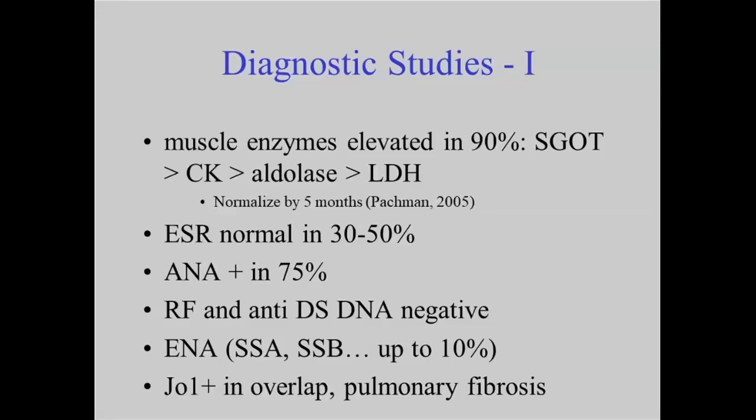There are now other antibody tests, including a whole panel called myositis antibodies. JO-1 is one representative antibody from this panel. These antibodies help classify or subclassify the condition and help predict what to look out for — for example, if JO-1 is positive, the patient could have more lung fibrosis, so we want to follow them closely. Other antibodies may suggest a higher risk of calcium deposition, so we pay attention to that and potentially adjust therapies to prevent it.